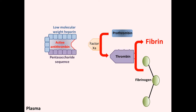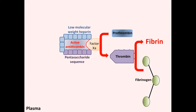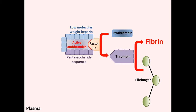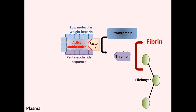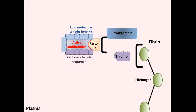This in turn accelerates the interaction between the active antithrombin and Factor Xa, leading to a similar effect: the decrease of prothrombin to thrombin, which further inhibits fibrinogen to fibrin and thus prevents further blood clotting.